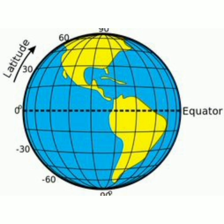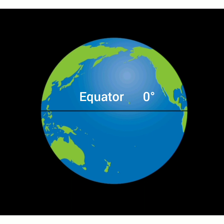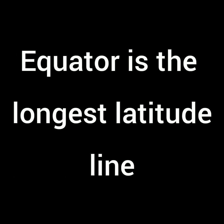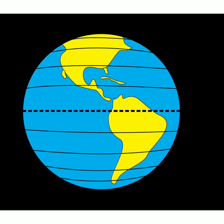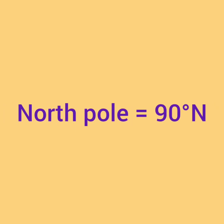Parallel lines of latitude move from 0 degrees to 90 degrees. Both the poles are at 90 degree latitude. The equator is 0 degree latitude and it is the largest latitude line. Latitude lines are also marked N for the northern hemisphere and S for the southern hemisphere. For example, the north pole is situated at 90 degree N.